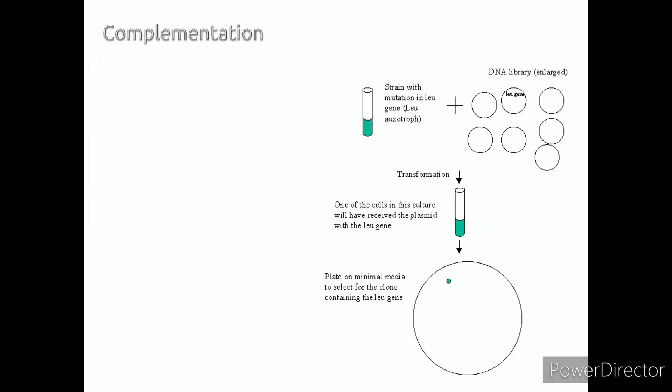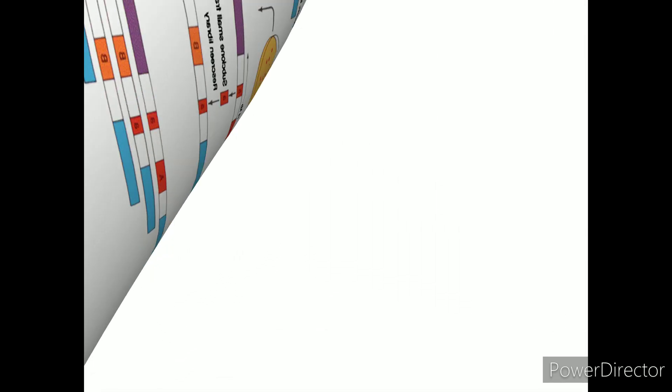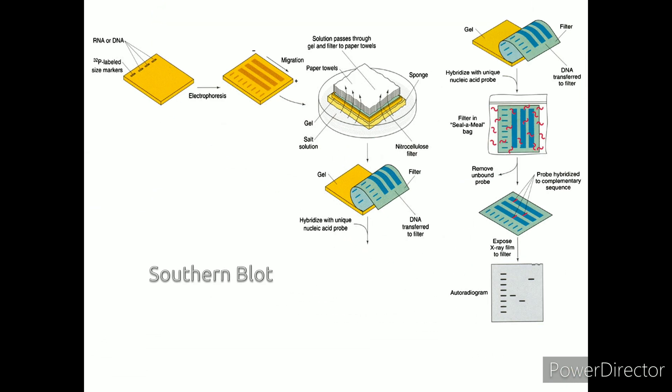Complementation: Clones can be detected based on their ability to confer a missing function on a mutant. Positional cloning is any method of cloning that makes use of information about a gene's chromosomal location in order to clone it. Southern blot allows the detection of a gene of interest by probing DNA fragments that have been separated by electrophoresis with a labeled probe.